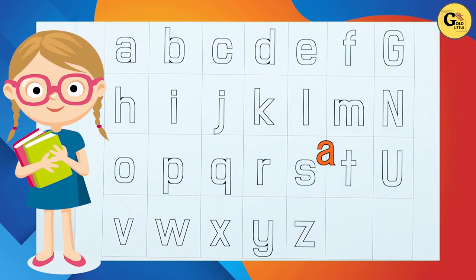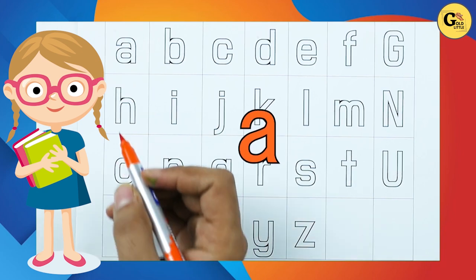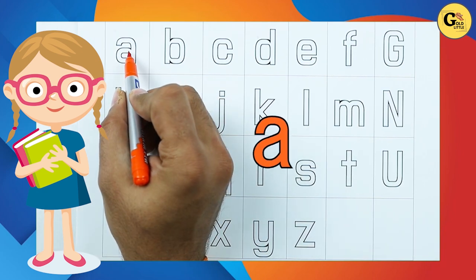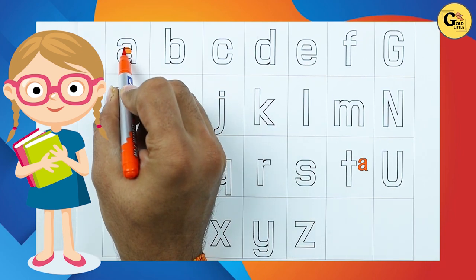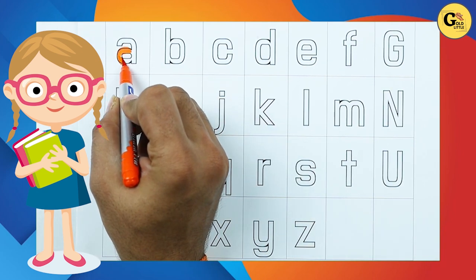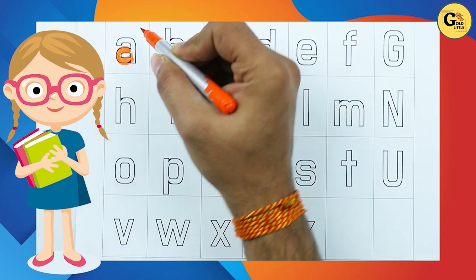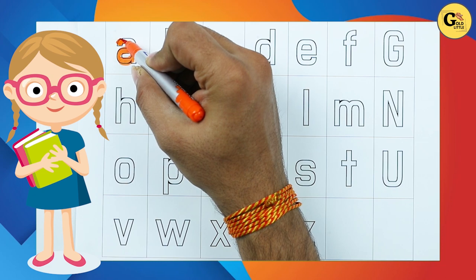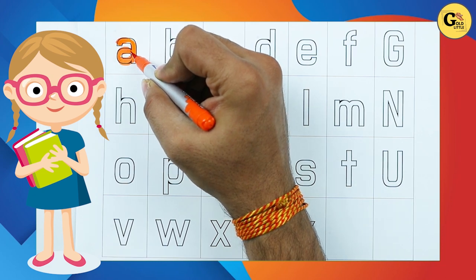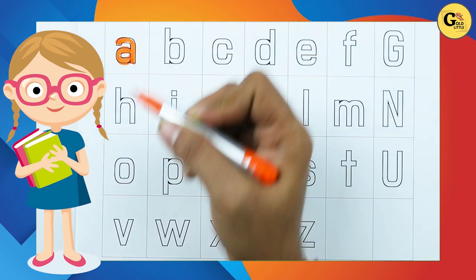Let's start. Make small A. A for Apple. It's A.